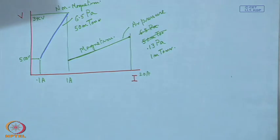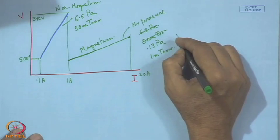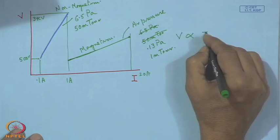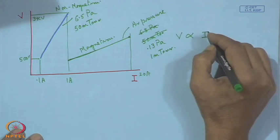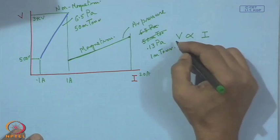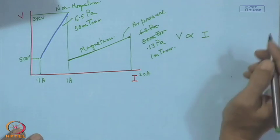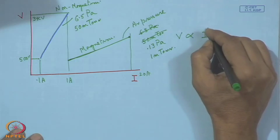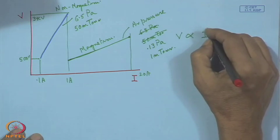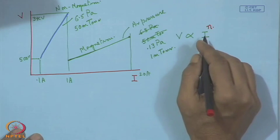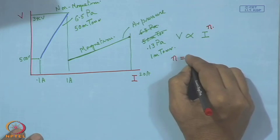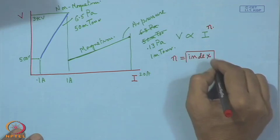This V-I characteristic can also be expressed as V proportional to I^n (or equivalently I proportional to V^n), where n is an index showing the performance of the magnetron. In ohmic conduction n = 1, but here n is not 1. From experience, n varies from 5 to 9. A higher value of n means better magnetron performance: to achieve the same cathode current, a lower voltage is needed, which is the role played by the magnetron.